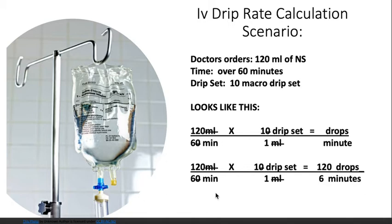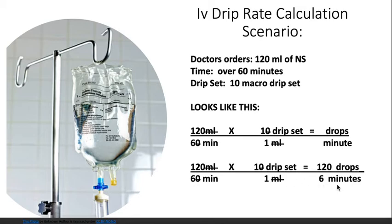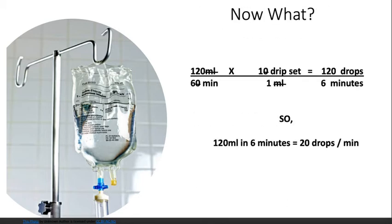To make the math easier, we cancel out common numerators and denominators. We cancel the milliliters in 120 mL with the milliliters in the drip set, and cancel the zeros in 60 minutes and 10 drips. We're left with 120 × 1 = 120 drops on top, and 6 × 1 = 6 minutes on the bottom. Dividing 120 by 6 gives us 20 drops per minute.